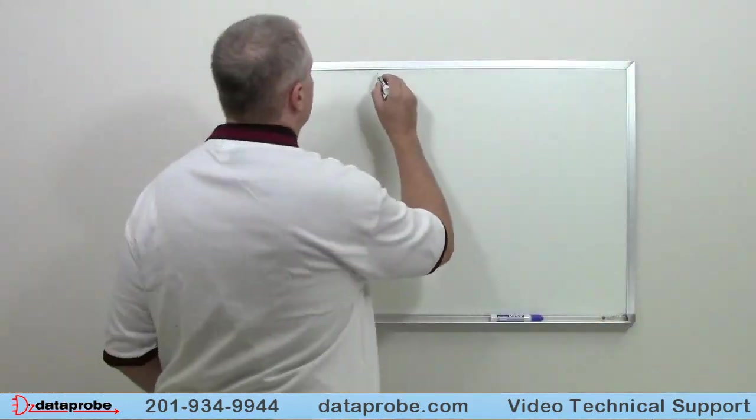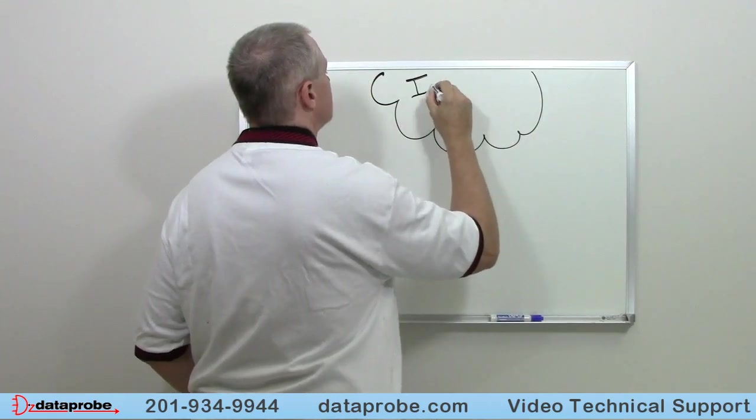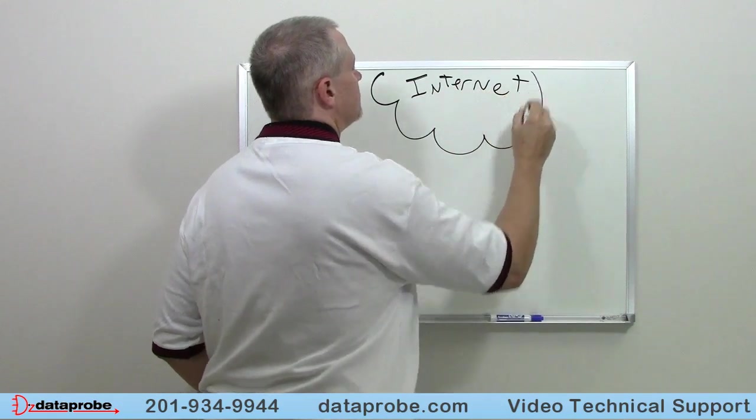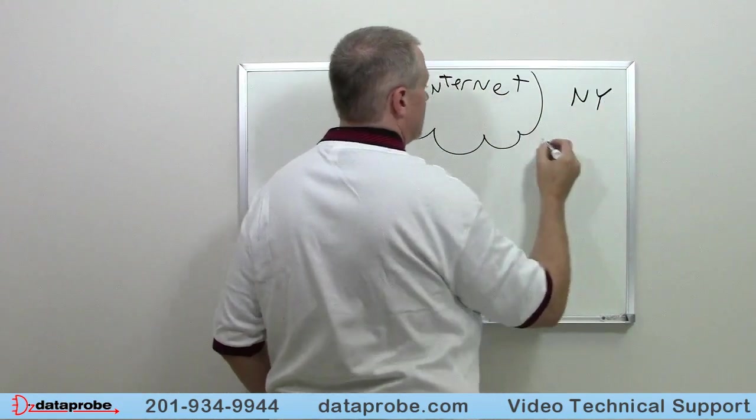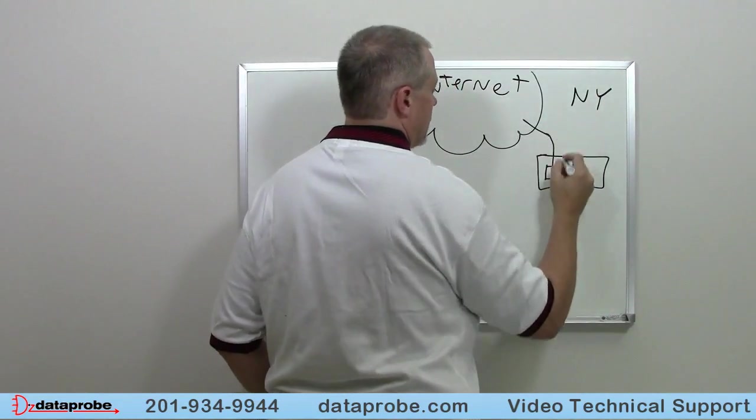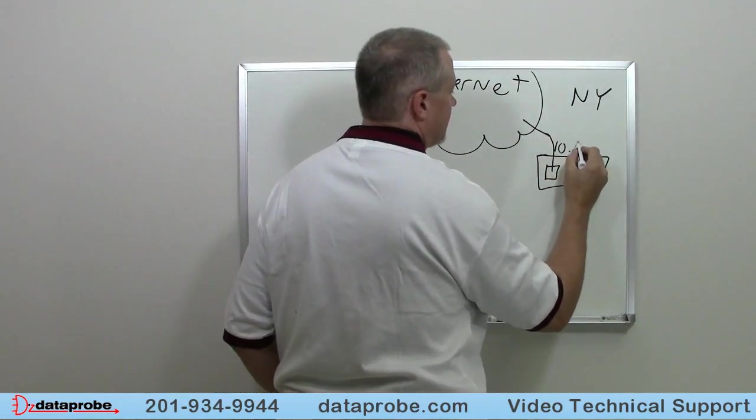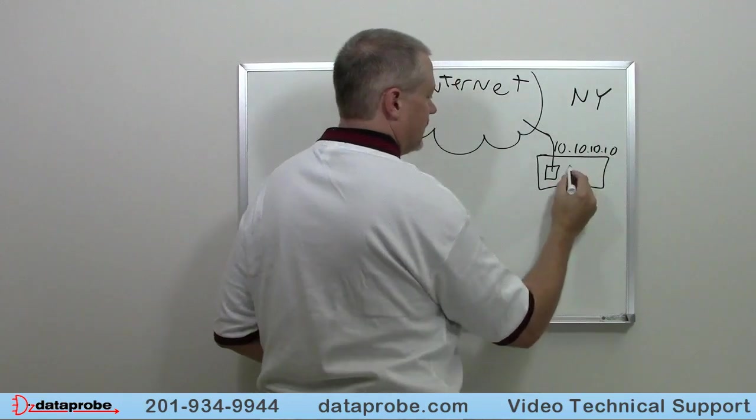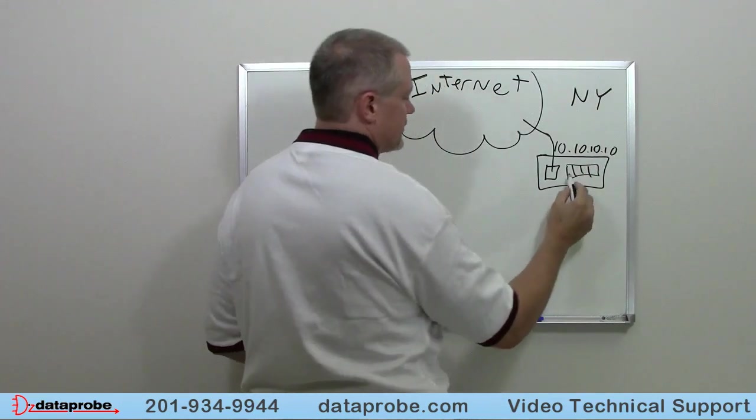Let's say that this cloud represents the internet. Over on this side we are going to have New York. New York has got its own little router going on over here. You've got the WAN side with the public IP. Let's say that's 10.10.10.10 and routers typically have a bunch of LAN connections, local area connections, down here.